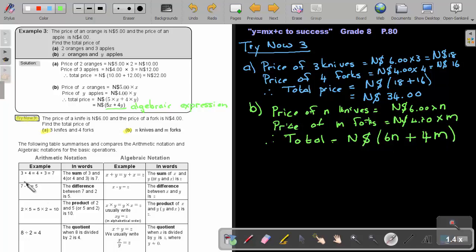And then finally, I just want to go through this table. The following table summarizes and compares the arithmetic notation and algebraic notation for the basic operations. So if I say the sum of 3 and 4, so it's 3 plus 4 or 4 plus 3, and that's equal to 7. Now, if I put it in terms of algebra, I will say the sum of X and Y is Z. So it's just X plus Y, or Y plus X will be equal to Z. Then, the difference between 7 and 2 is 5. So there is arithmetic notation. The difference between X and Y is Z. There, an algebraic notation. The product of 2 and 5 is 10.